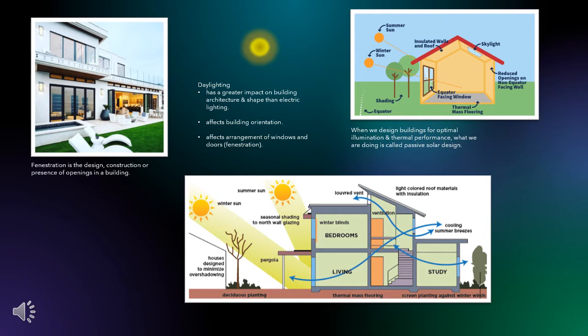Fenestration is the fancy name that means the design, construction, or presence of openings in a building. When we design buildings for optimal illumination and thermal performance, what we are actually doing is called passive solar design. Passive solar design considers the angle of the sun, how the light and sunlight will affect the space through places of entrance, and how the heat will be retained or ventilated.